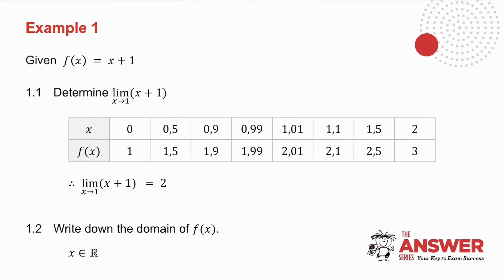If I give you f of x equals x plus 1, and I ask you to determine the limit as x tends to 1 of x plus 1, that means as I make x closer and closer to 1, what does x plus 1 get closer and closer to? So I've taken values of x, 0, 0.5, 0.9, 0.99. I've taken values of x below 1, getting closer and closer to 1.